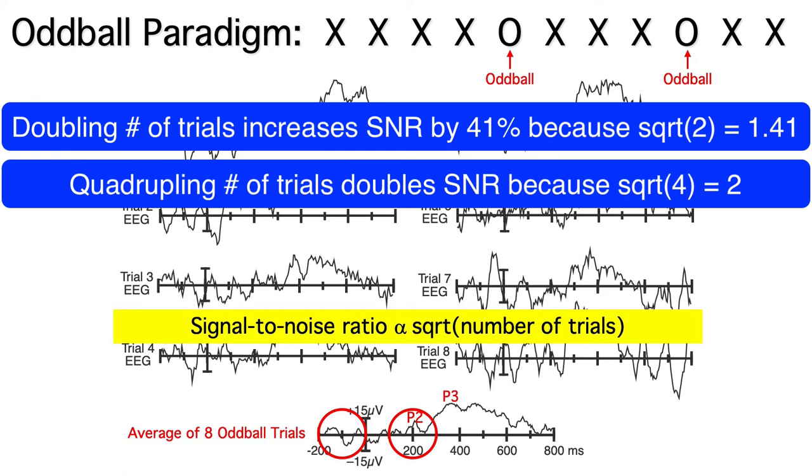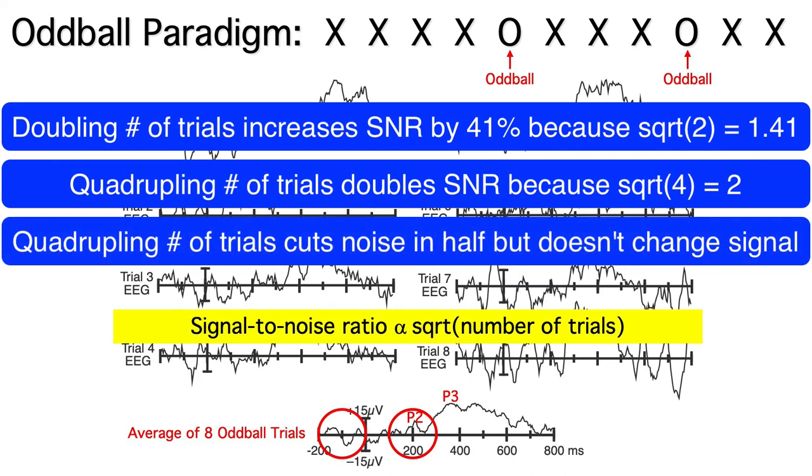Increasing the number of trials doesn't change the signal, it just decreases the noise. So if we quadruple the number of trials to double the SNR, this would effectively cut the noise in half.